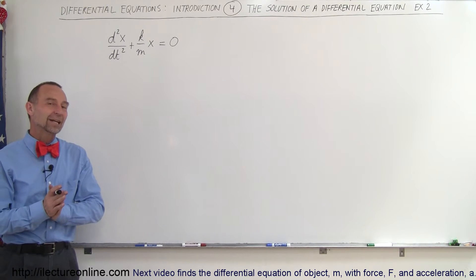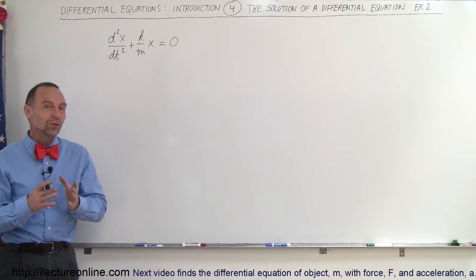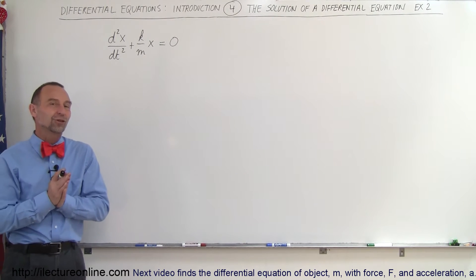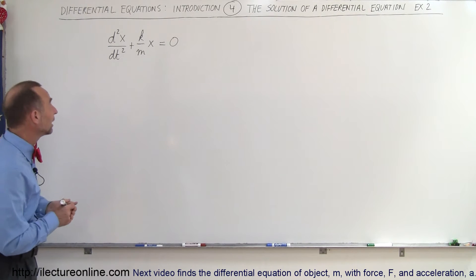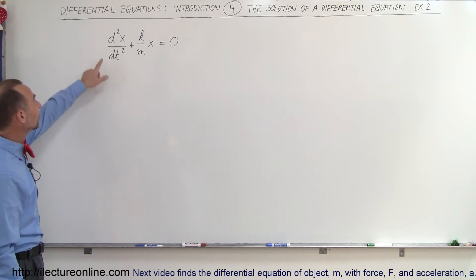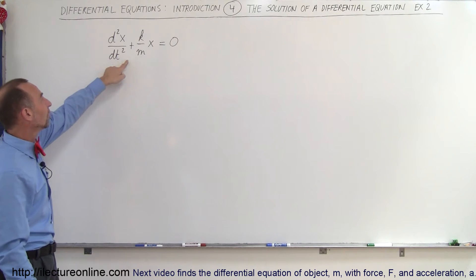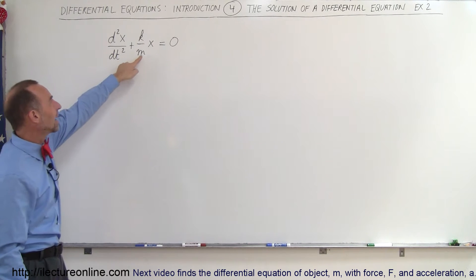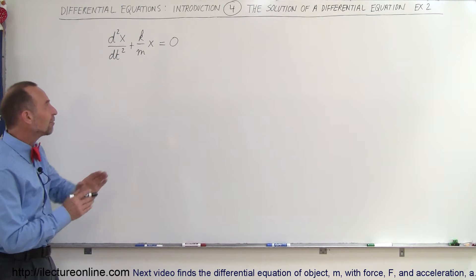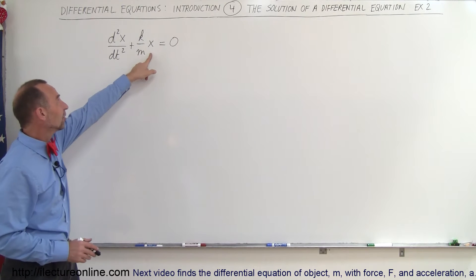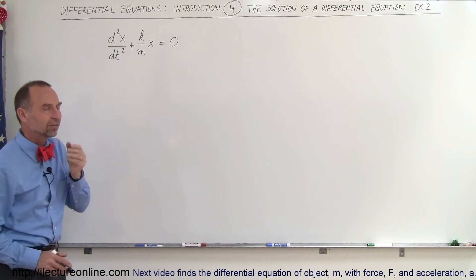Welcome to ElectronLine. Here's another example of what the solution to a differential equation looks like. This is a very typical differential equation: the second derivative of x with respect to time plus some constant times x equals zero. We have a function x and the second derivative with respect to time of x.